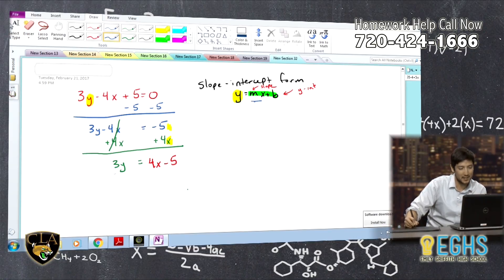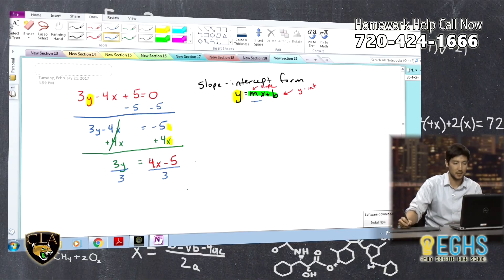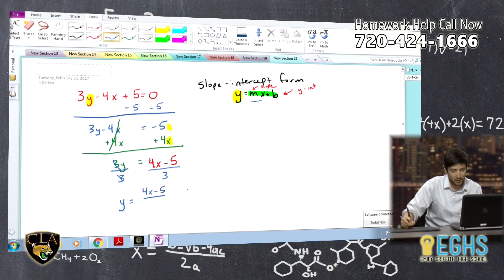So, now we're still getting this y by itself. We're dividing by 3. This is all going to be divided by 3. And I think a lot of times this is where the most common mistake is. So, let's get to that in a second. But these are going to cancel out. So, y equals 4x minus 5 divided by 3.